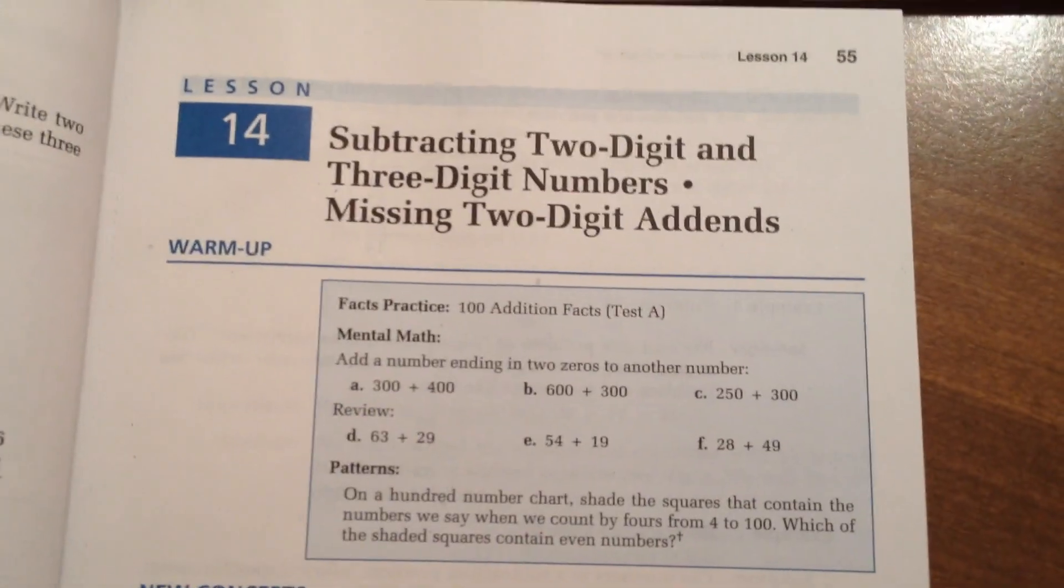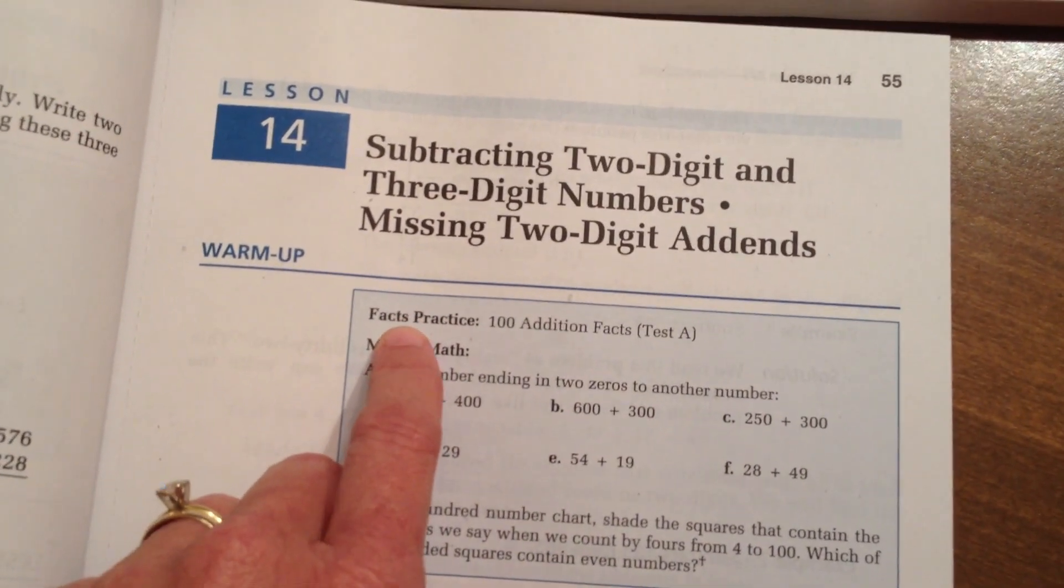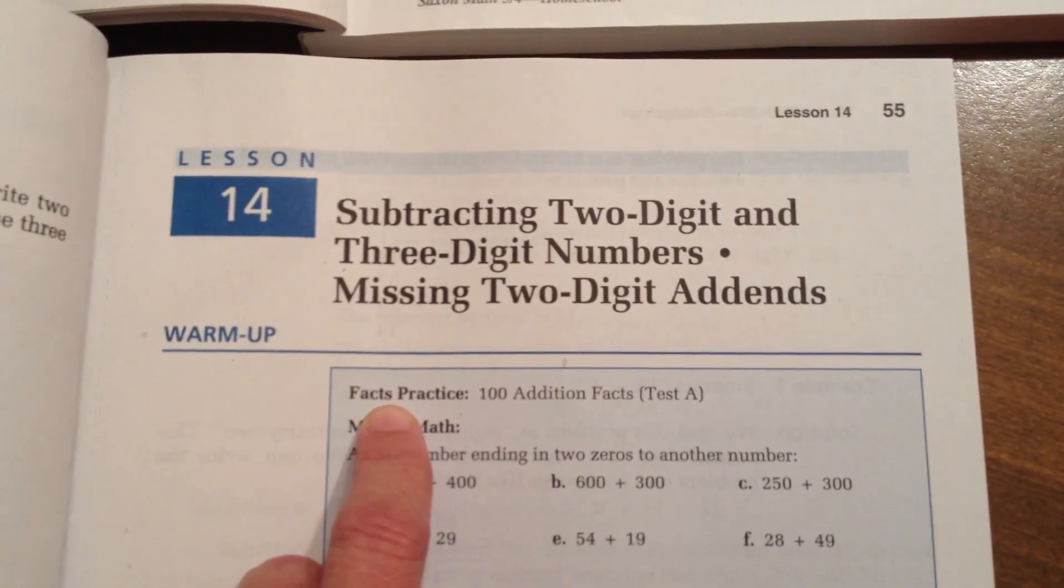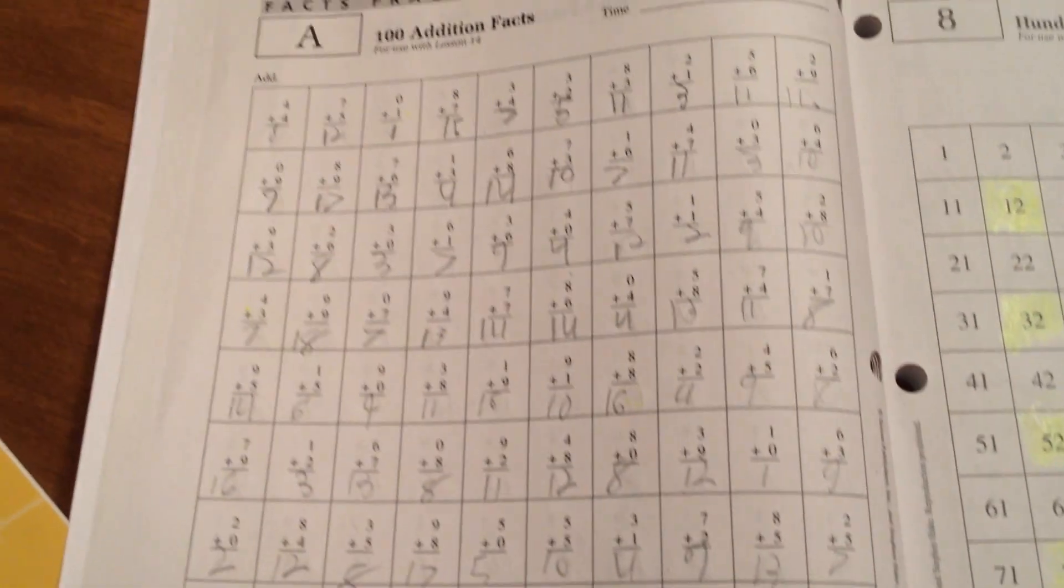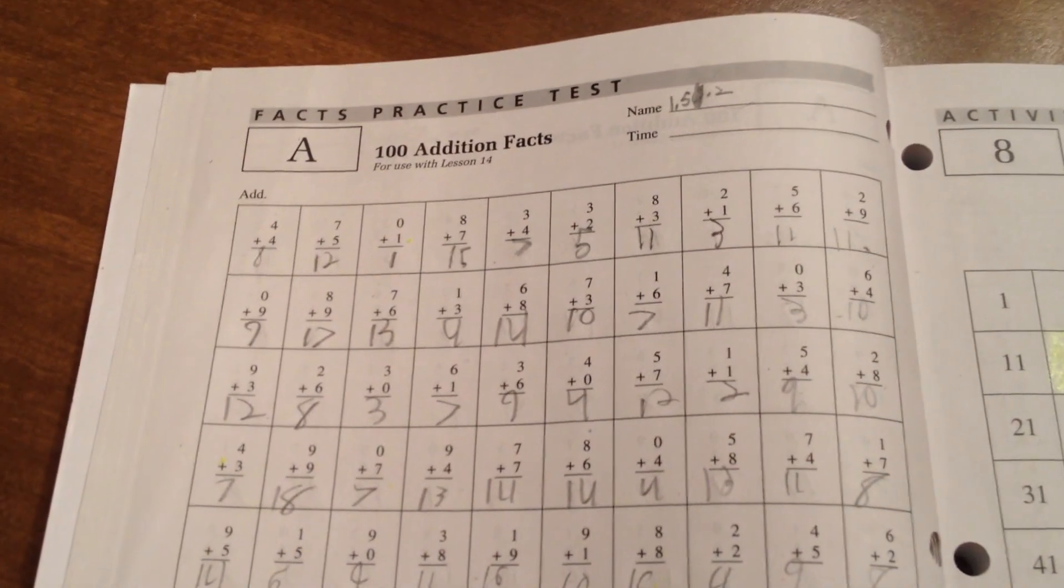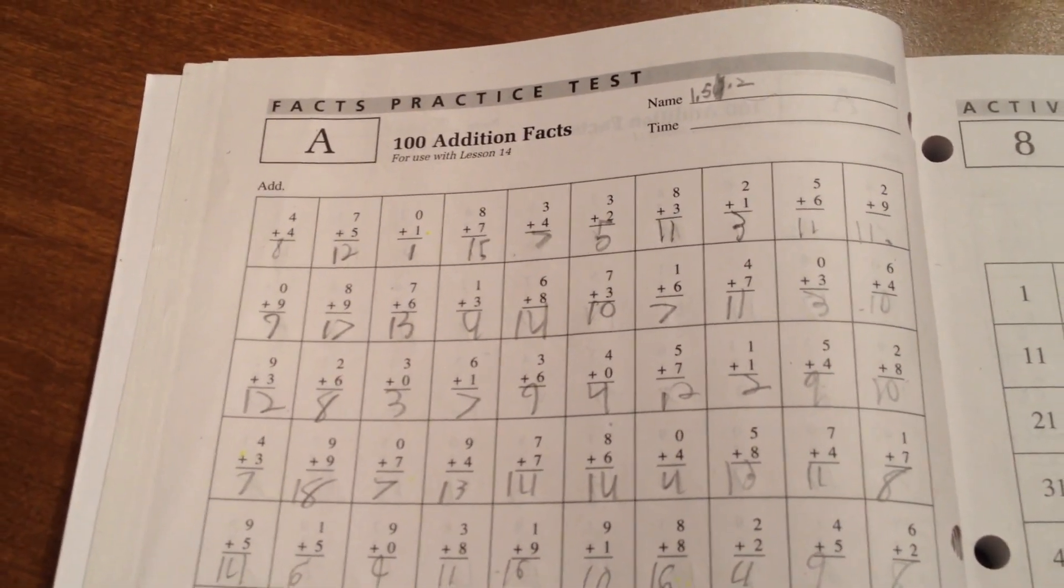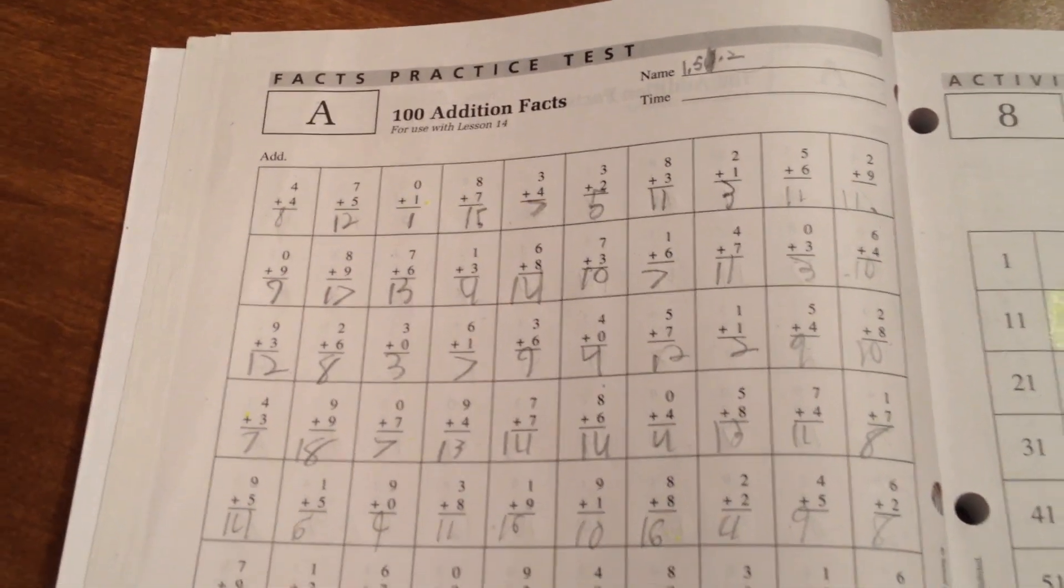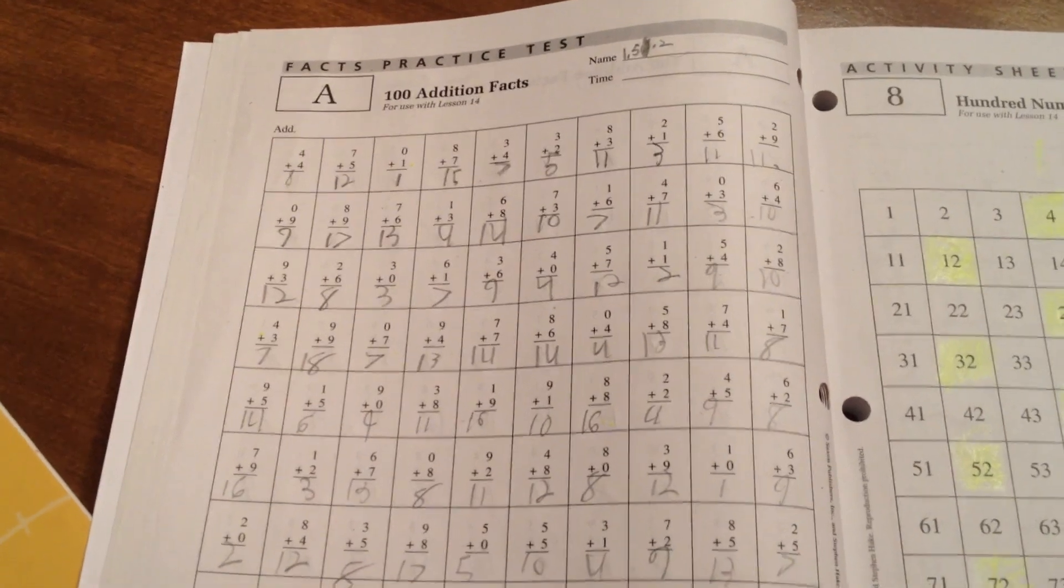You'll notice that the very first thing it wants you to do is facts practice. What we do is we get out our facts practice book, and I'll show it to you up here. This one's already been completed. This is a 100 addition facts. I set the timer. My son completes his 100 addition facts, and then we grade it.